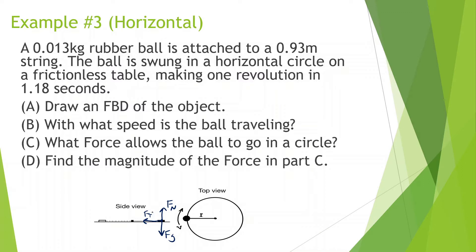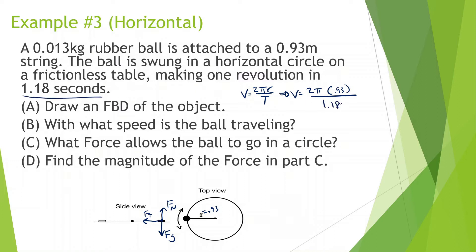With what speed is the ball traveling? For objects moving in circles, velocity equals 2πr divided by t. So velocity equals 2π times r, where r is the length of the string — 0.93 meters — divided by the period t of 1.18 seconds. Velocity equals 2π(0.93) divided by 1.18, which gives us 4.95 meters per second.